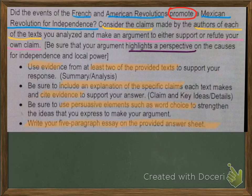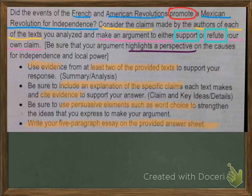The first key verb to notice is 'promote' — it means to make possible. Like a party promoter makes events possible and lets people know they're going to happen. So did the French and American revolutions make the Mexican revolution possible? To answer that, I have to decide whether I think they did or didn't, which brings me to the words 'support' and 'refute.' The texts may disagree, so I'll need to decide which source is credible.